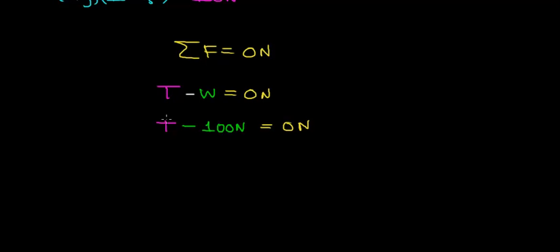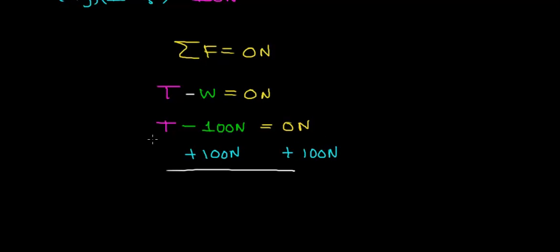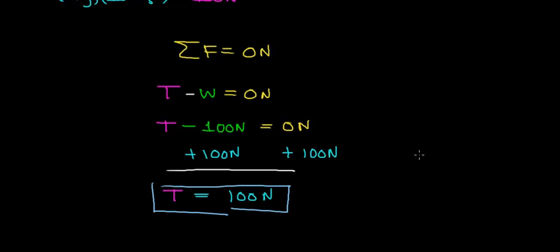We're trying to solve for T, the tension in the rope. We add 100 newtons to both sides of the equation — what you do to one side you do to the other. So T minus 100 plus 100 equals 0 plus 100, which gives us T equals 100 newtons. The tension in the rope is 100 newtons.